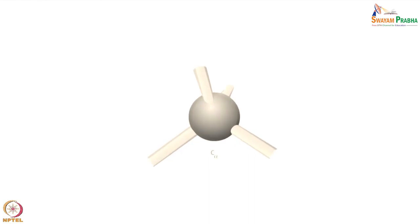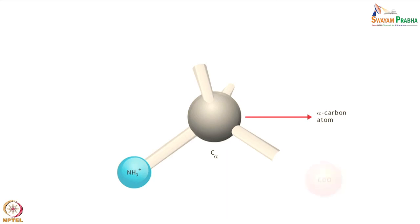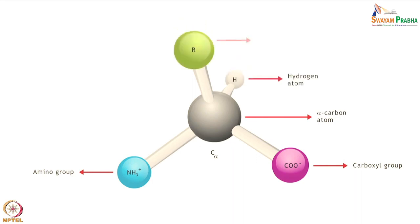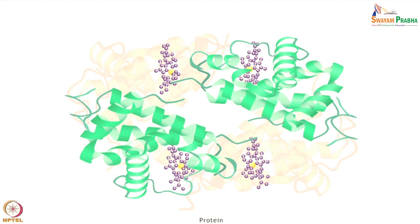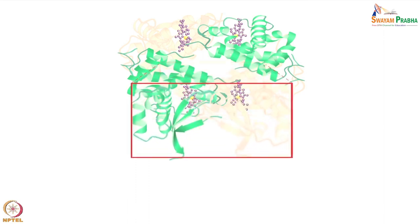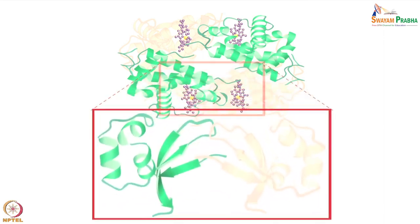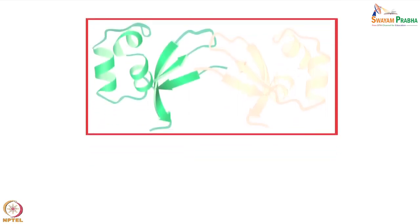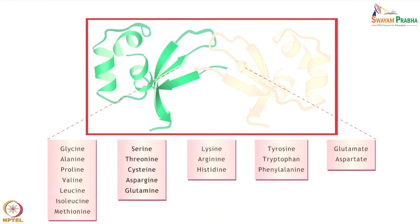Amino acids are the building blocks or monomers that make up proteins. They consist of a central alpha carbon atom bonded covalently to an amino group, a carboxyl group, a hydrogen atom, and a variable side chain also called the R group. Amino acids are the basic monomeric constituents of proteins, found in varying amounts depending upon the type of protein. They are classified based on the properties of their side chains or R groups, which vary in size, structure, and charge. The polarity of the side chains is one of the main bases for classification.